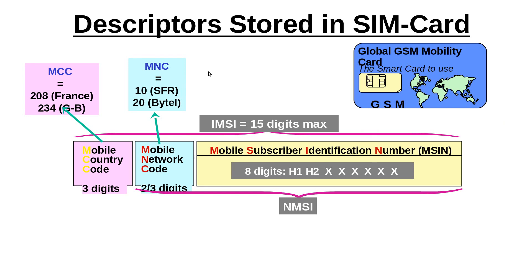Now, what are the different fields in the IMSI? As mentioned earlier, IMSI is stored in the GSM SIM card. First of all, you have the Mobile Country Code — it is a three-digit code and you should not confuse it with the country code used for dialing purposes. For example, the dialing code for France is not 208. Rather, the Mobile Country Code uniquely identifies the mobile networks of France as compared to the world, and the mobile network of France is known by the Mobile Country Code which is 208, but it is not used in dialing.